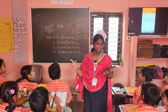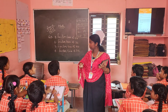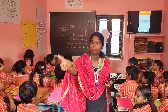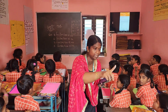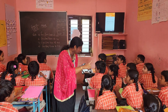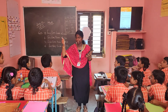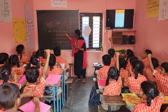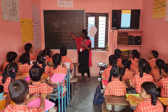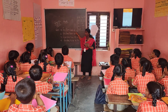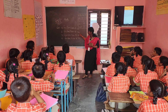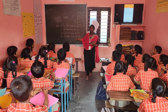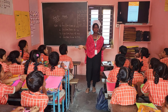I will divide this class into four groups. The first group of students, second group, third group, fourth group. Is it clear? Show me a thumbs up. Your questions are on the board. The first group, you have to do the factor tree of 24. The second group, you need to find out the factor tree of 36.